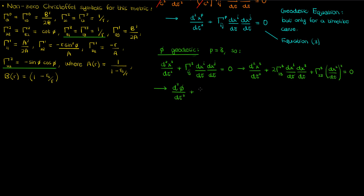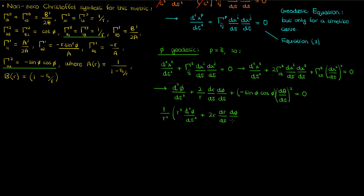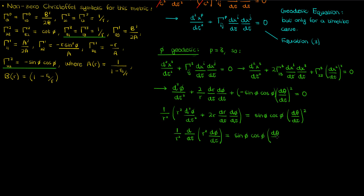Plugging in the nonzero Christoffel symbols and substituting x¹, x², x³ for r, θ, and φ gives our equation. Moving the sin φ cos φ term to the right and factoring out 1/r² from the left-hand side, the term in parentheses on the left looks like the product rule applied to r² times dφ/dτ. Using that fact to simplify, and because of spherical symmetry, we can set φ = π/2 without loss of generality, making cos φ = 0 on the right.